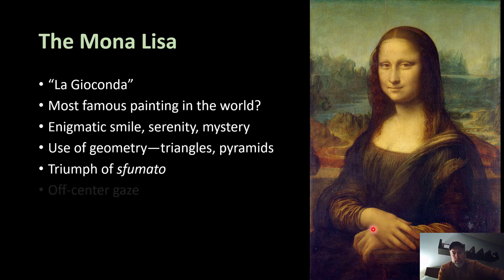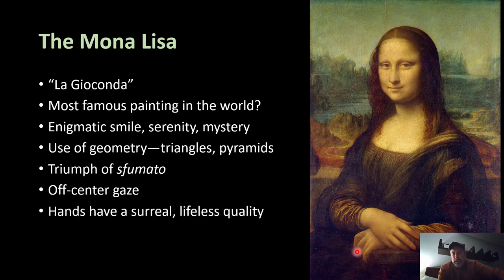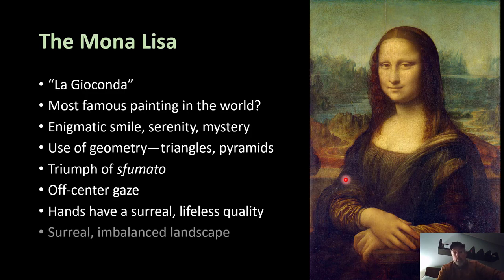Her off-center gaze adds to the mystery — who is she looking at? What's making her smile? Her hands have kind of a surreal, lifeless quality, almost like dead hands hanging off her limbs. It's a combination of extreme realism in terms of lighting and shadow, but people have commented that her hands don't really seem to be a believable part of this particular woman's body — that's what adds an eerie, odd quality. Maybe a combination of all those things together created the mystery that's captivated viewers for centuries. And you have the same kind of surreal, imbalanced landscape in the background: a lake, jagged cliffs, a desert-like area, more jagged mountain areas — a jarring divide between where she's sitting and what's behind her. Very Leonardo.